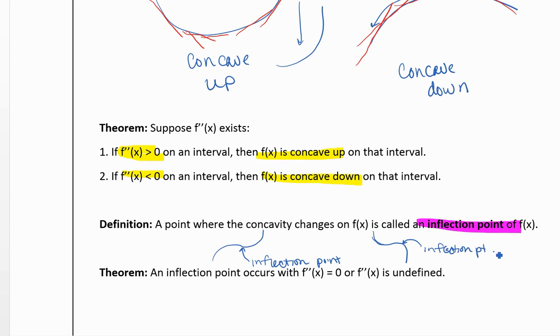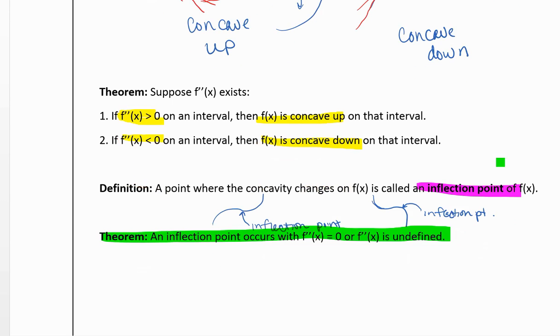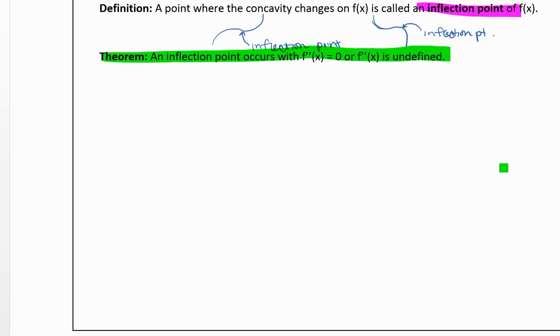And how do we find our inflection points? Well, an inflection point occurs where the second derivative is zero or is undefined, and that point is in the domain of the original function.